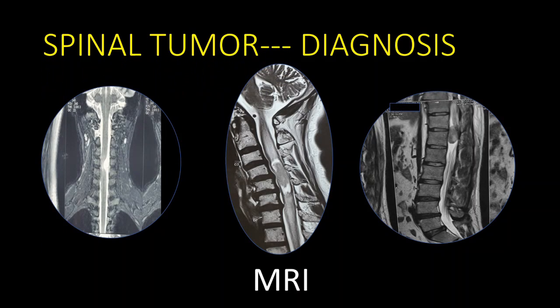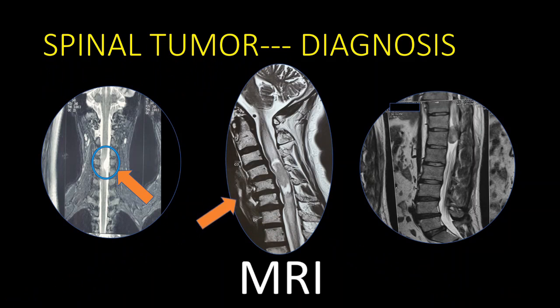So, how is a spinal tumor diagnosed? The basic diagnosis and the gold standard is MRI. The MRI lets us know whether the tumor is in the neck area, the chest wall area, or the lower back area. They are called cervical, thoracic, or lumbar tumors.